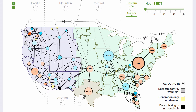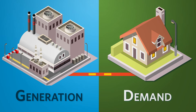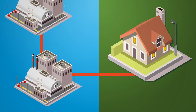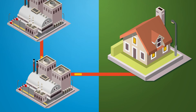These balancing authorities, or BAs, are neighboured by and connected to other balancing authorities. We call these interconnections, and through them, a balancing authority can trade electricity to meet each other's demands. At any given moment, one balancing authority may not have enough electricity to meet its own demand, so it receives surplus electricity from one of its neighbours.